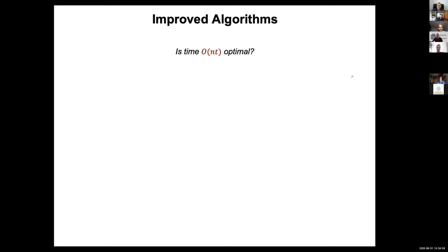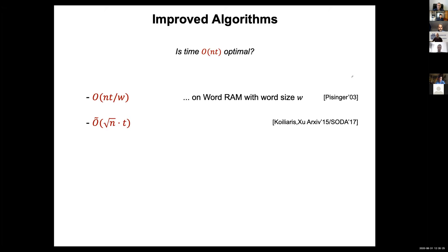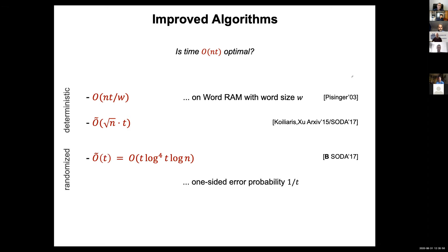Since we teach this in undergrad classes, we should ask whether the algorithm is close to optimal or can be improved a lot. In the word-RAM model, handling w bits at once, it has long been known that you can shave off a factor w. The first real breakthrough was five years ago by Koiliaris and Xu, showing running time O(√n · t) up to log factors. Then I showed you can get rid of the factor n completely, replacing it by just logarithmic terms in t and n — though that algorithm is randomized. Jin and Wu improved the log factors further, and now the best is O(t log t).